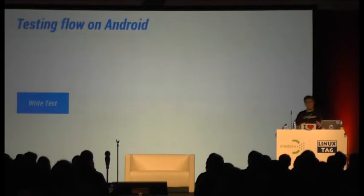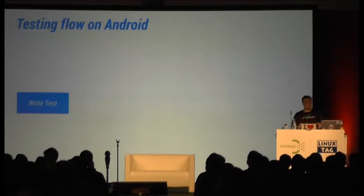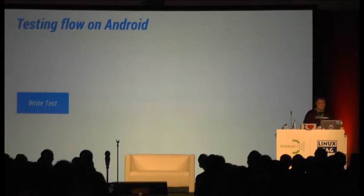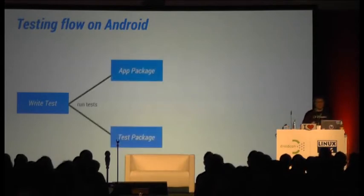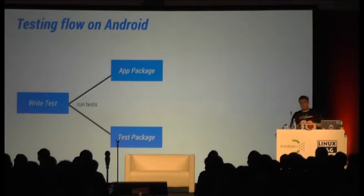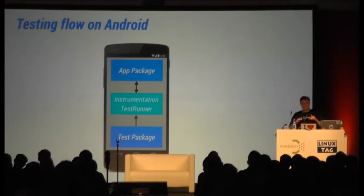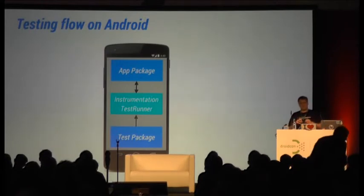Let me give you a quick introduction about the testing flow on Android. Basically, you write your test, and what Gradle does is it packages a test APK and an app APK, and installs both of these APKs on the device. Then your test APK can use the test runner, which uses the instrumentation to control the app under test.